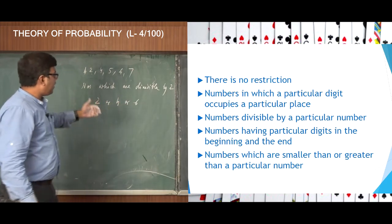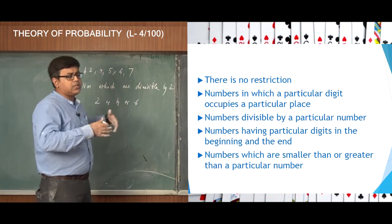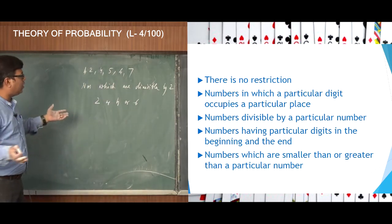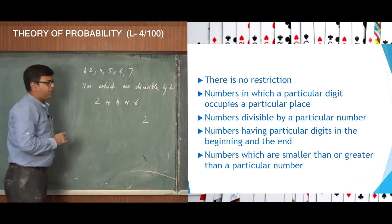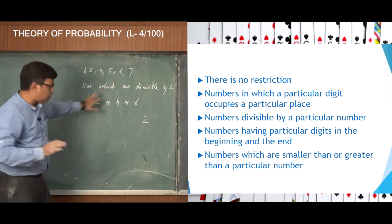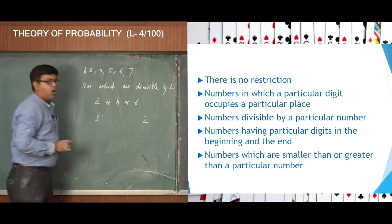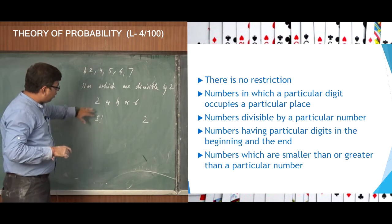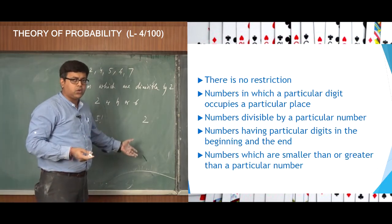Once I fix a digit in the units place, there is no restriction on the other numbers. If I fix 2 in the units place, I am left with 5 digits. So for fixing 2 in the units place, there are 5 factorial ways of arranging the remaining 5 digits. All those 5 factorial numbers so formed will be divisible by 2.